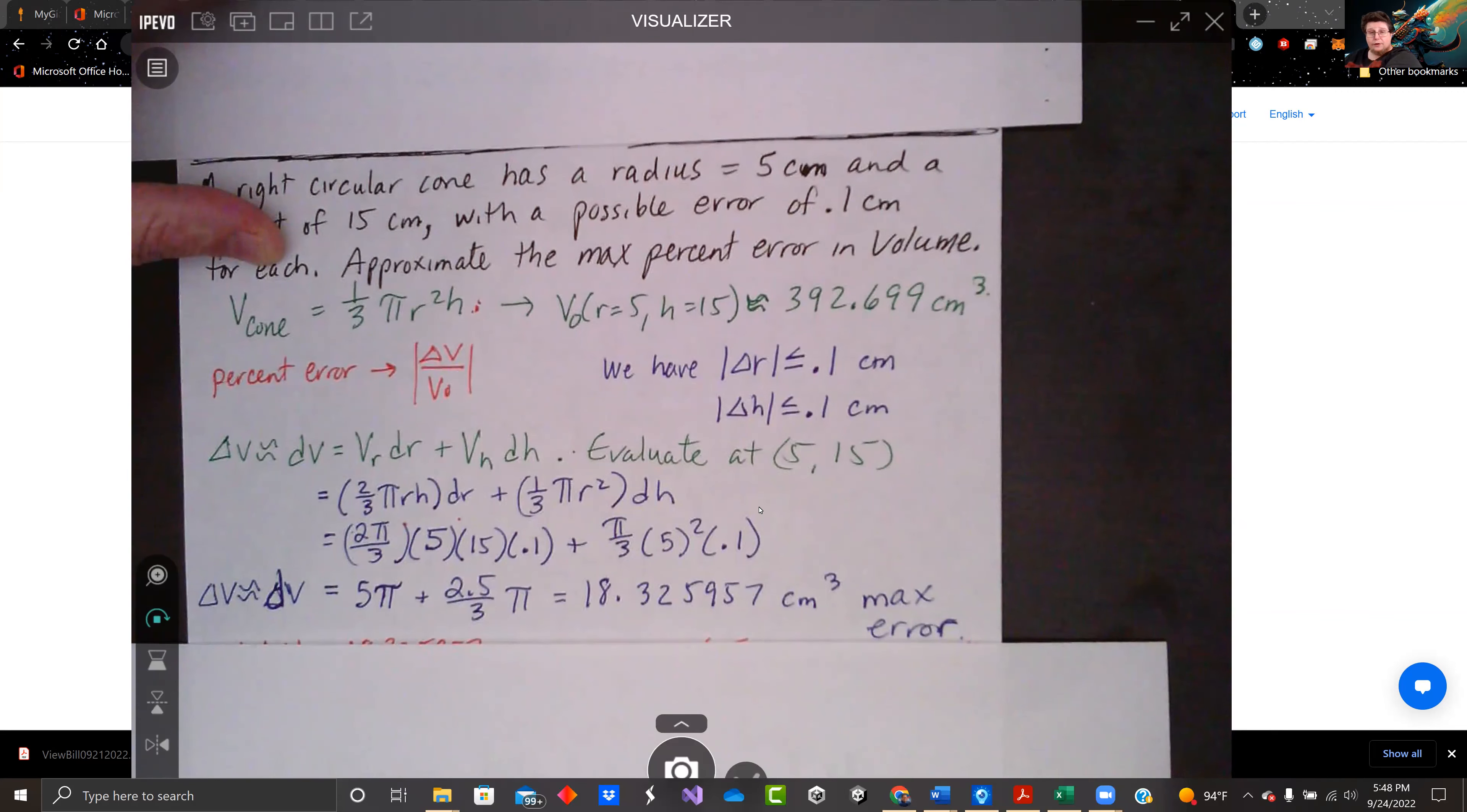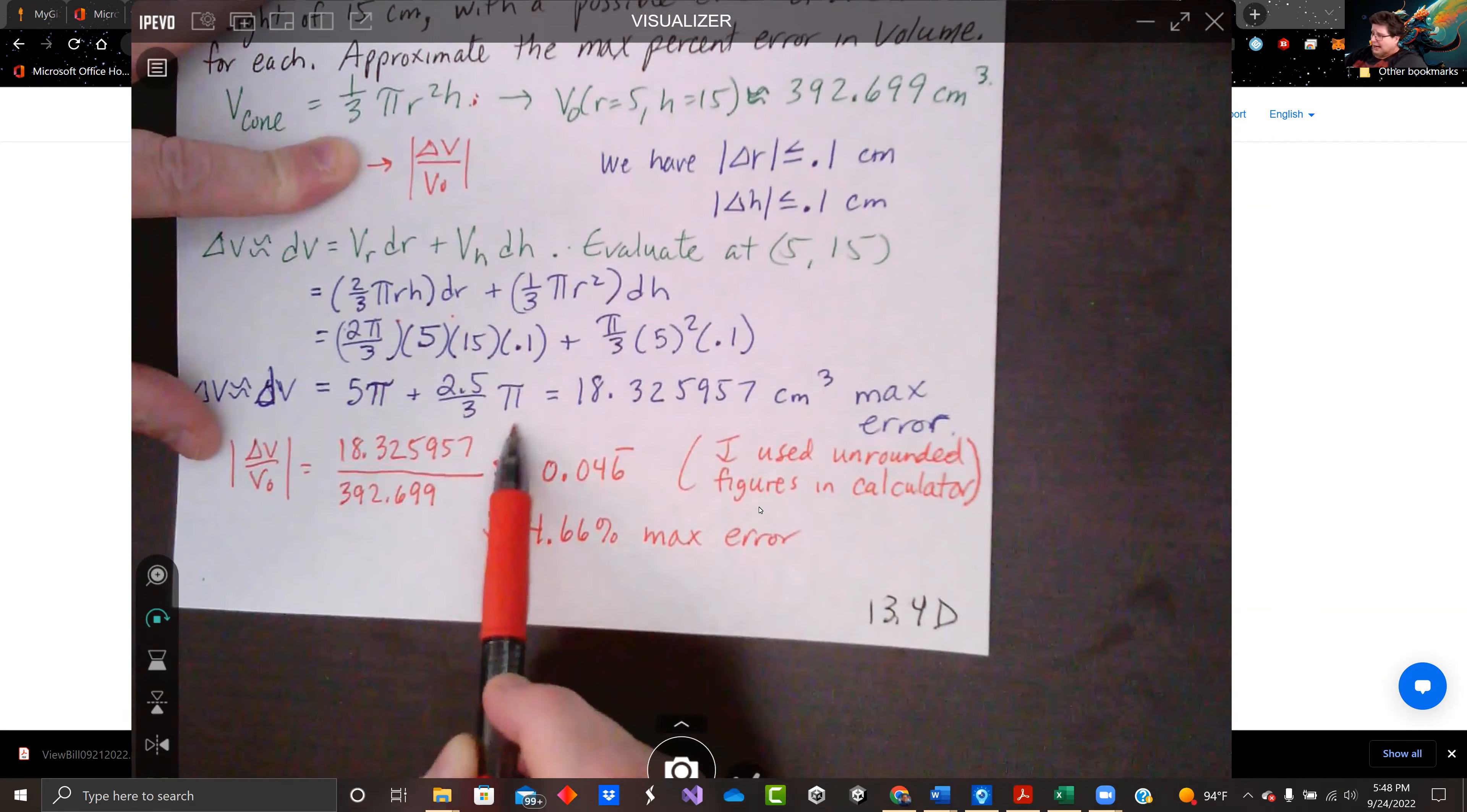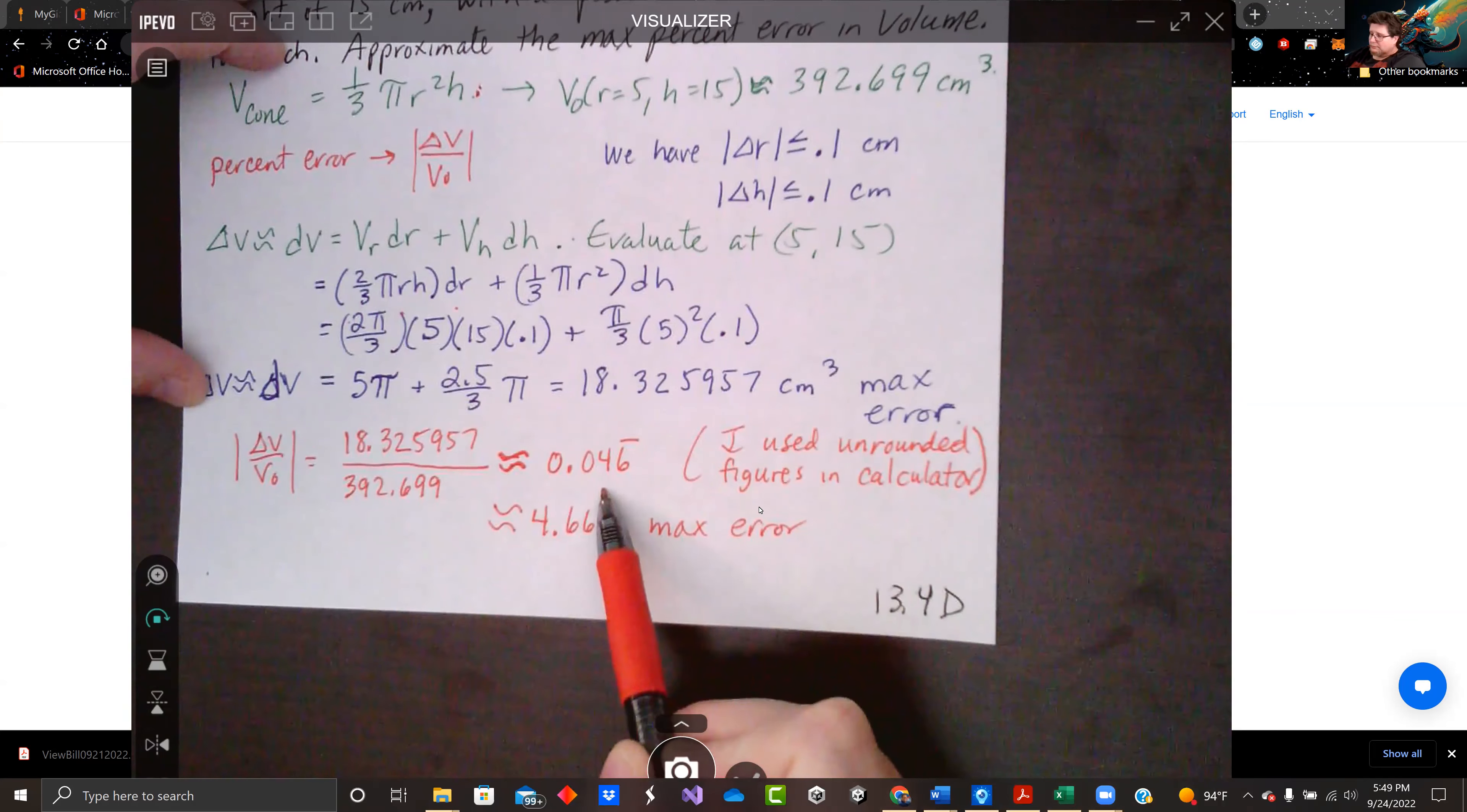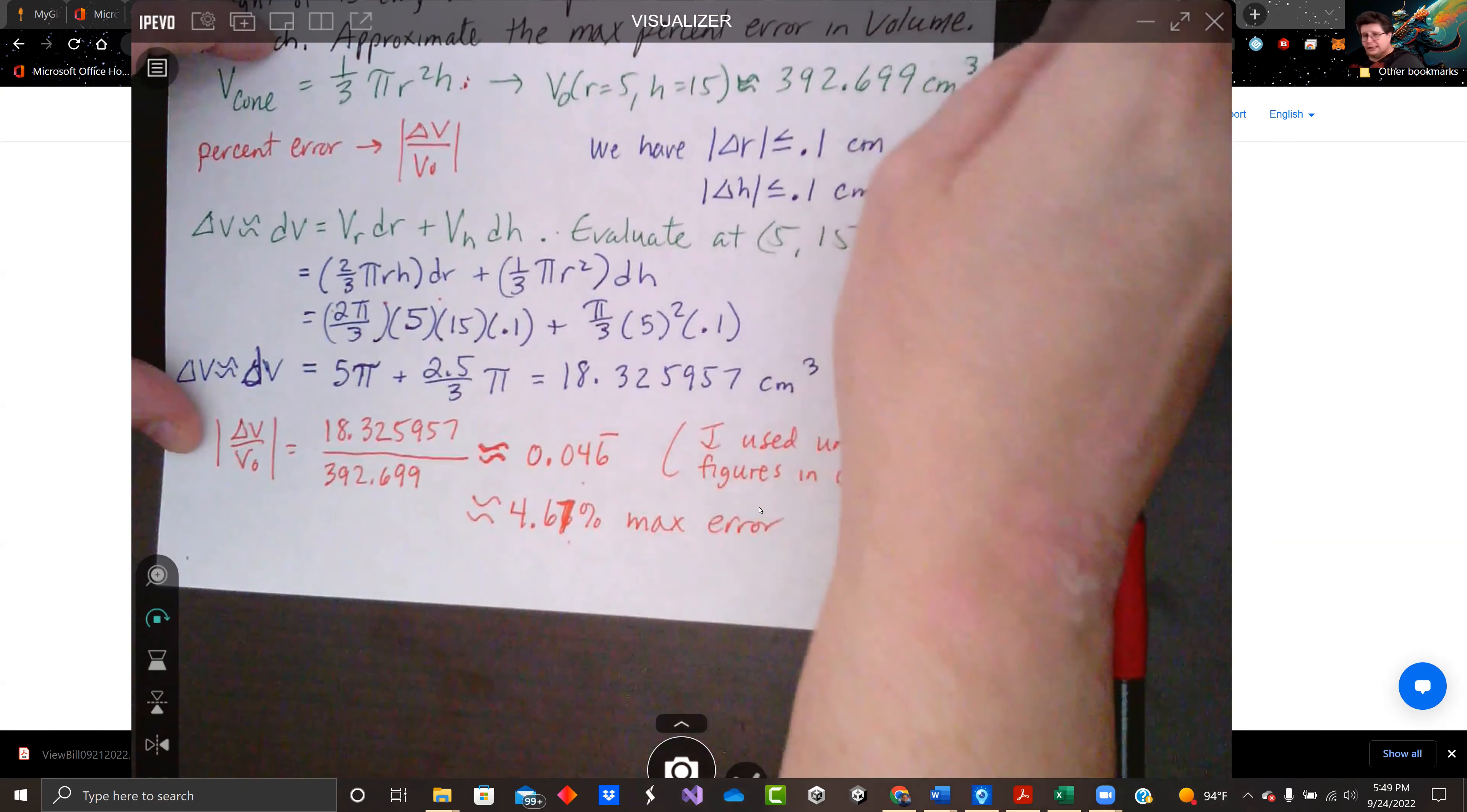That's our max error. We want to find our volume, our percent volume error. So we have this function here. Dividing this, I actually use this right here, the 5 pi plus 2.5 over 3 pi. I divided that by the actual volume calculated with 15 and 5, so I didn't round anywhere. I didn't use what I wrote down on the paper. So the actual error as a percentage error, the decimal was 0.046, which converts to a percentage of 4.66. I guess rounding would make that 4.67, wouldn't it? I don't know if we like that or not, but it is what it is.